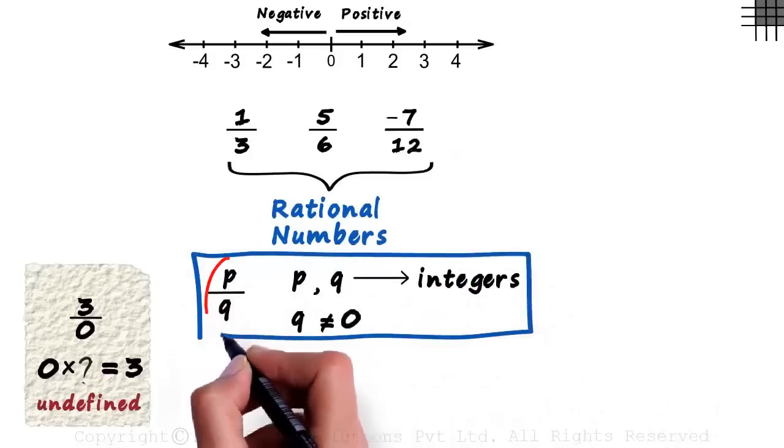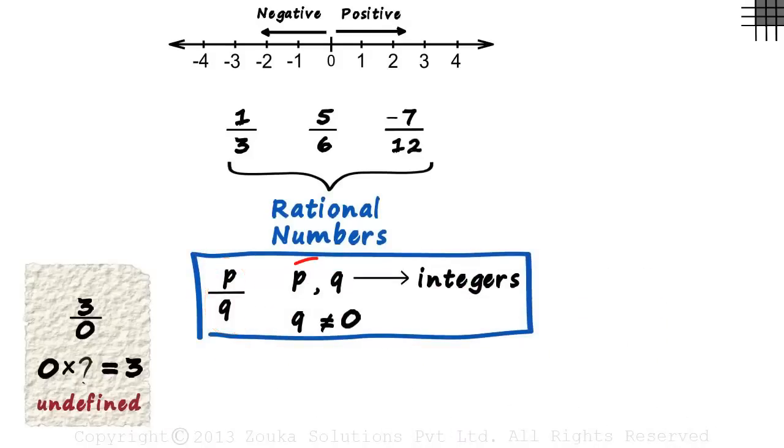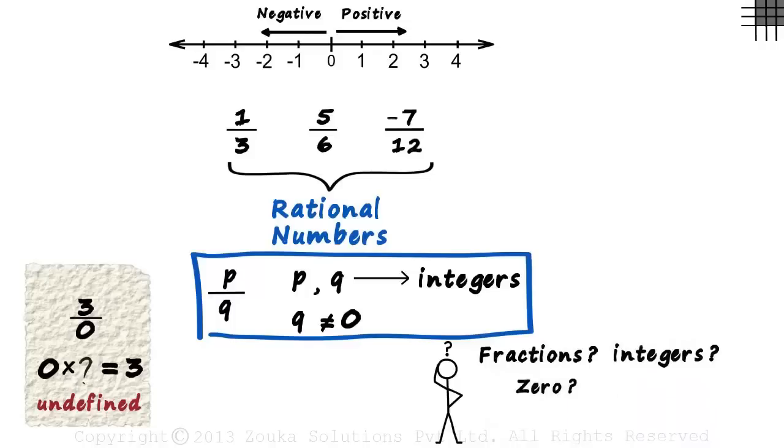It is a number of the form P by Q where P and Q are integers and Q is not equal to zero. There are many questions that should pop up in your head when you see this definition. What is the difference between rational numbers and fractions? Are integers classified as rational numbers? What about zero? How do we plot such numbers on a number line? And how do we compare two rational numbers?